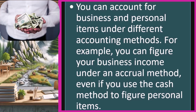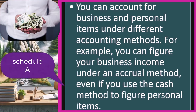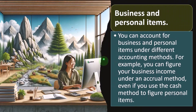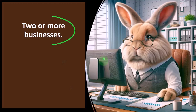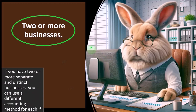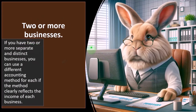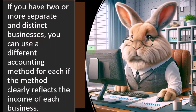You can have your Schedule C income statement on an accrual-based system, if appropriate, while still reporting other expenses on your Schedule A and on Schedule 1 of the 1040 on a cash-based system. If you have two or more separate and distinct businesses, you can use different accounting methods for each, if the method clearly reflects the income of each business.